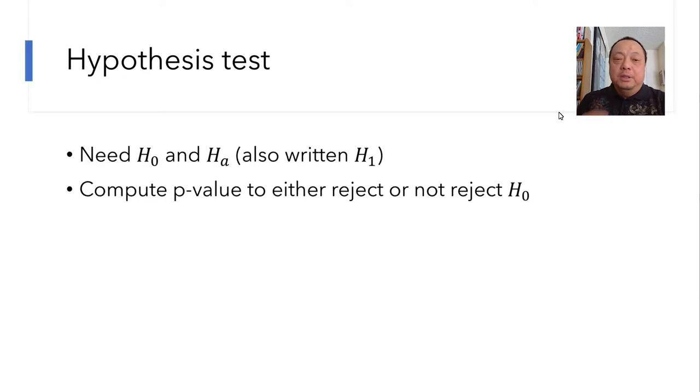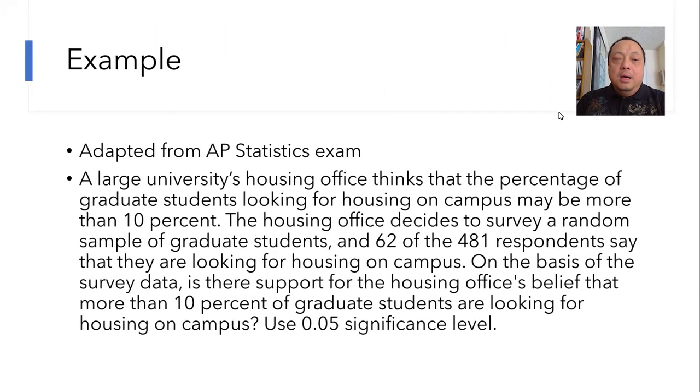Let's take an example. Here's a question adapted from an old AP statistics exam. A large university's housing office thinks that the percentage of graduate students looking for housing on campus may be more than 10%. The housing office decides to survey a random sample of graduate students, and 62 of the 481 respondents say that they are looking for housing on campus. On the basis of the survey data, is there support for the housing office's belief that more than 10% of graduate students are looking for housing on campus? Use a .05 significance level.